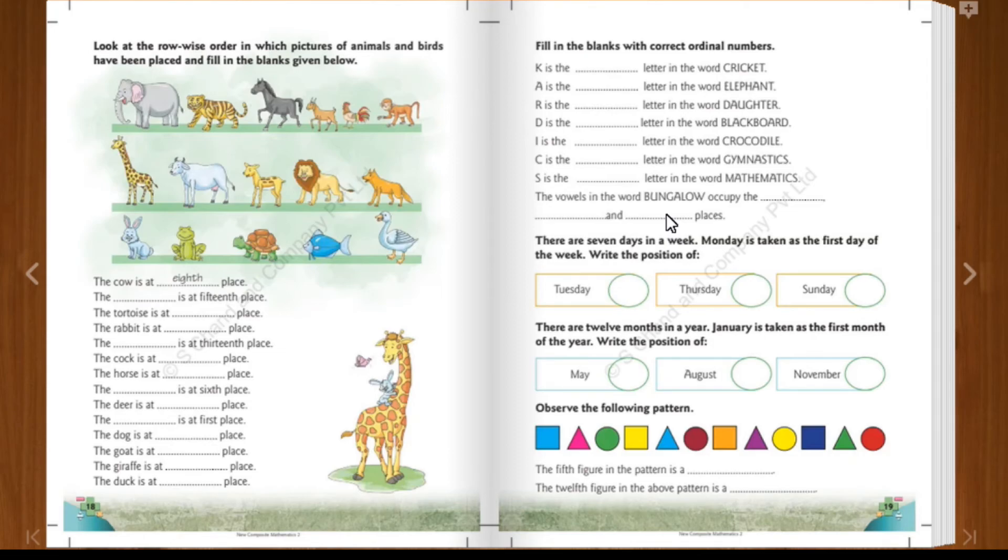Month also. January, February, March, April, May. May is at the 5th place. So 5th month of the year is May. Then August and November you can find.